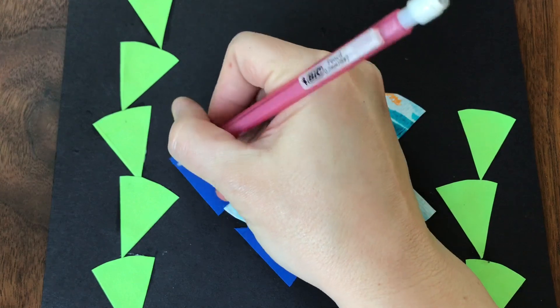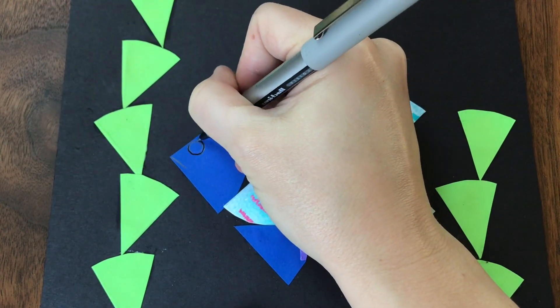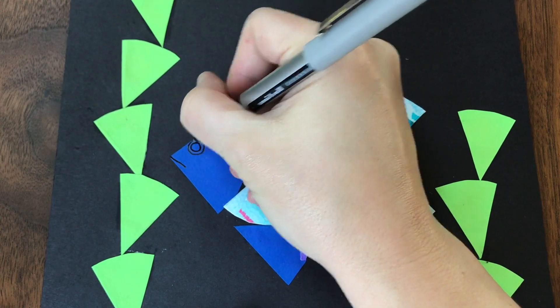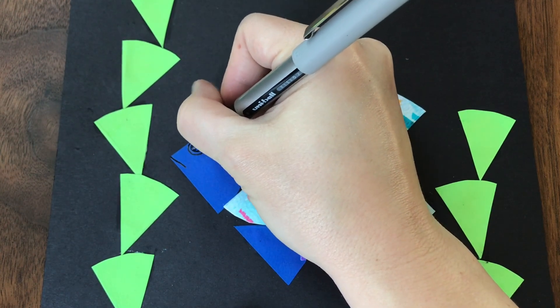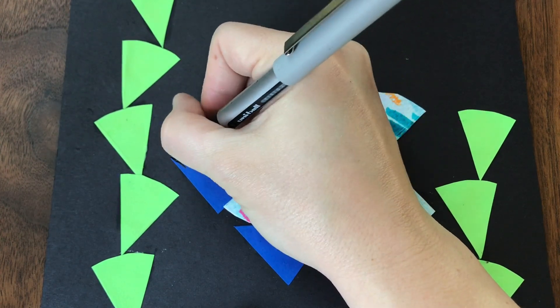Once everything is dry, you can go back and add any details you want. I'm using pencil first and then I'm going to add on some pen for my little frowny fish face. Have fun making your picture pie design. It can be anything you want.